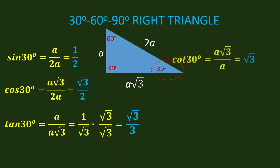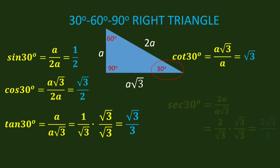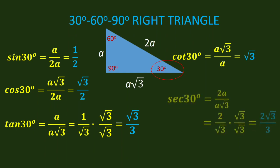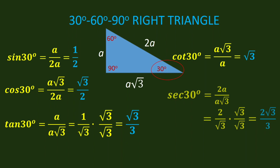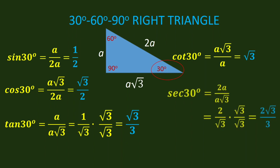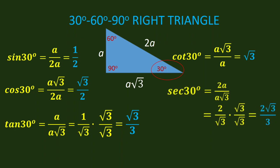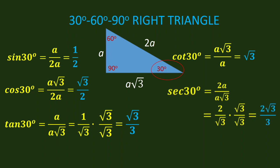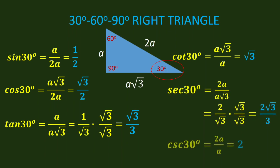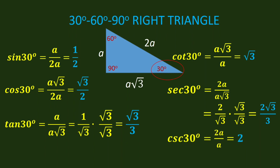Cotangent 30 degrees is A square root of 3 over A. We cancel A, so we have square root of 3. Secant 30 degrees is hypotenuse over adjacent — that is, 2A over A square root of 3. We cancel A and have 2 over square root of 3. We rationalize the denominator by multiplying by square root of 3 over square root of 3. Finally, we have 2 square root of 3 over 3. Cosecant 30 degrees is hypotenuse over opposite — that is, 2A over A. We cancel A, and the answer is 2.